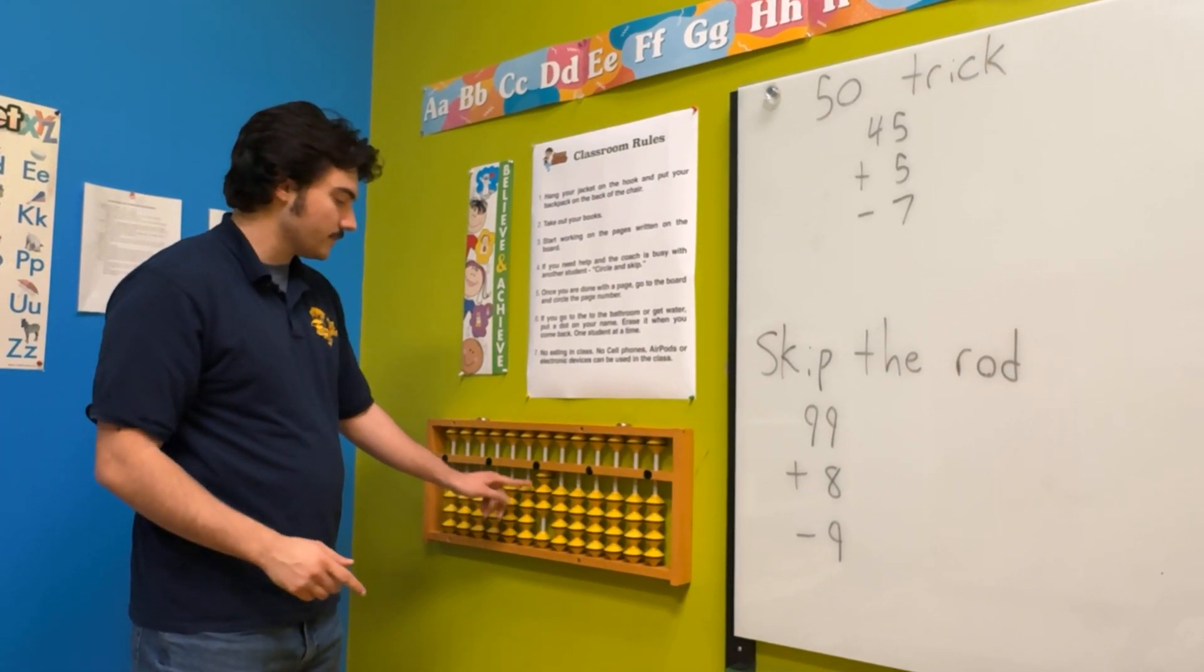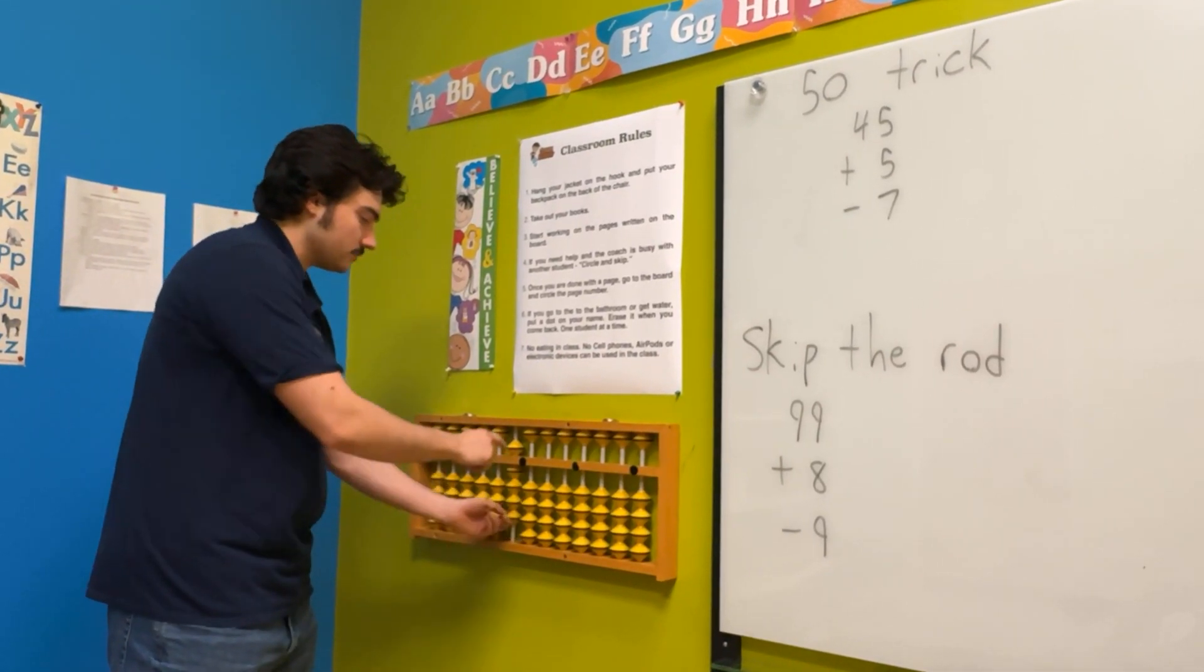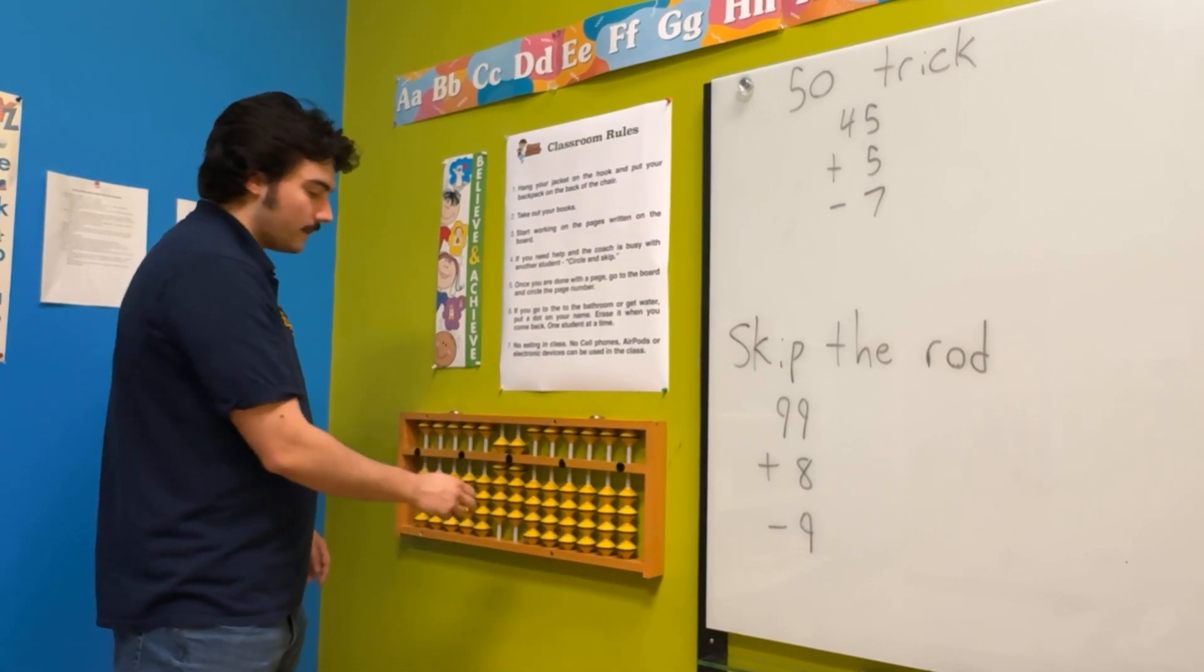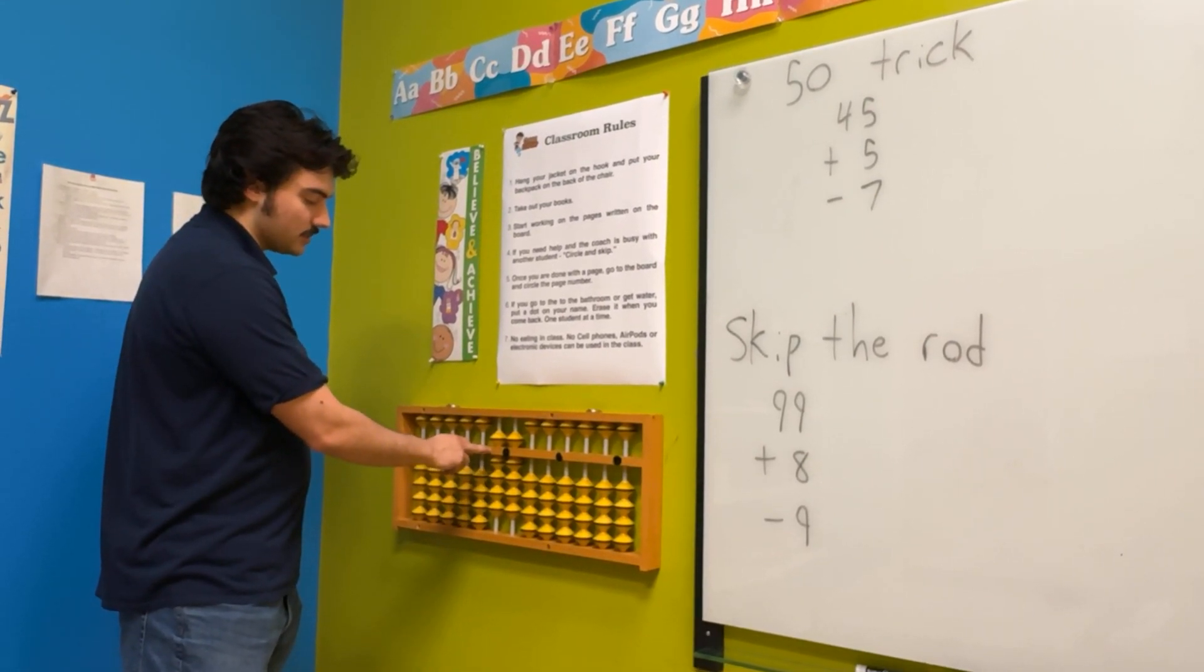Now let's try skipping the rod. We have our first problem, 99. Now we want to add eight. We can't add eight here, so we've got to use our big buddy, but we can't add a 10 here.